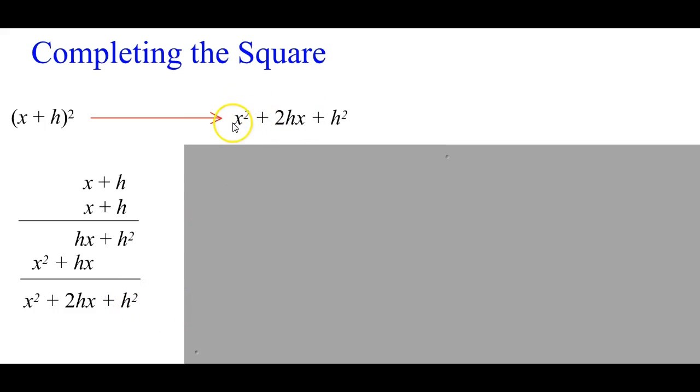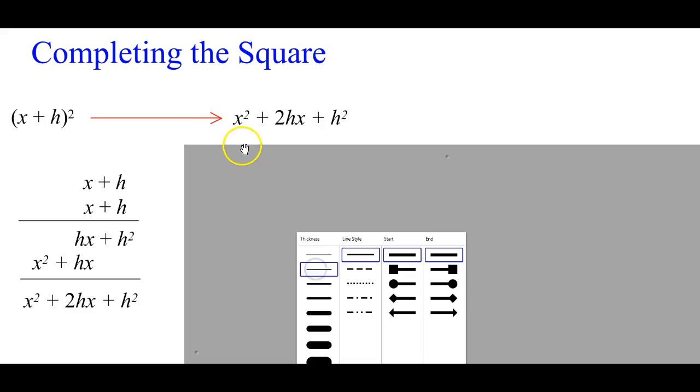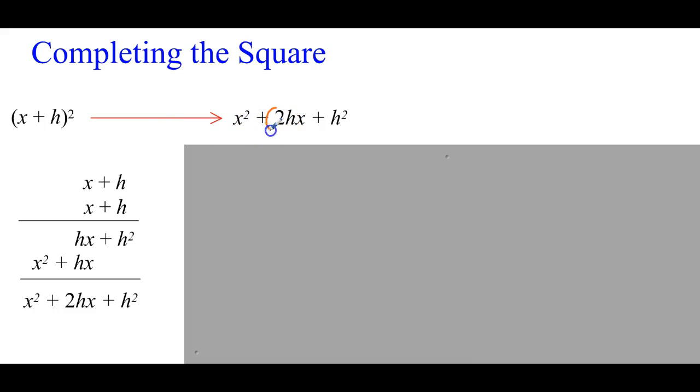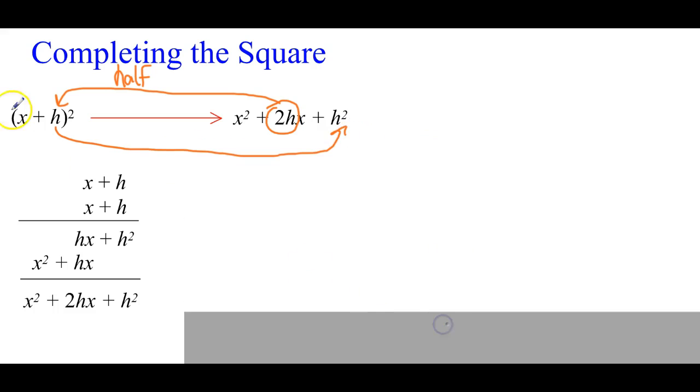So this is our pattern right here. Notice what's going on here. This is the interesting part. We're going to start here completing the square. Notice we go from 2h back to the perfect square form, which is the binomial that's being squared. And this is a half relationship. So we take this coefficient on the x, we divide it by 2, that gives us the h, and then we take that h there, and we come back over here, and that is a squared relationship.